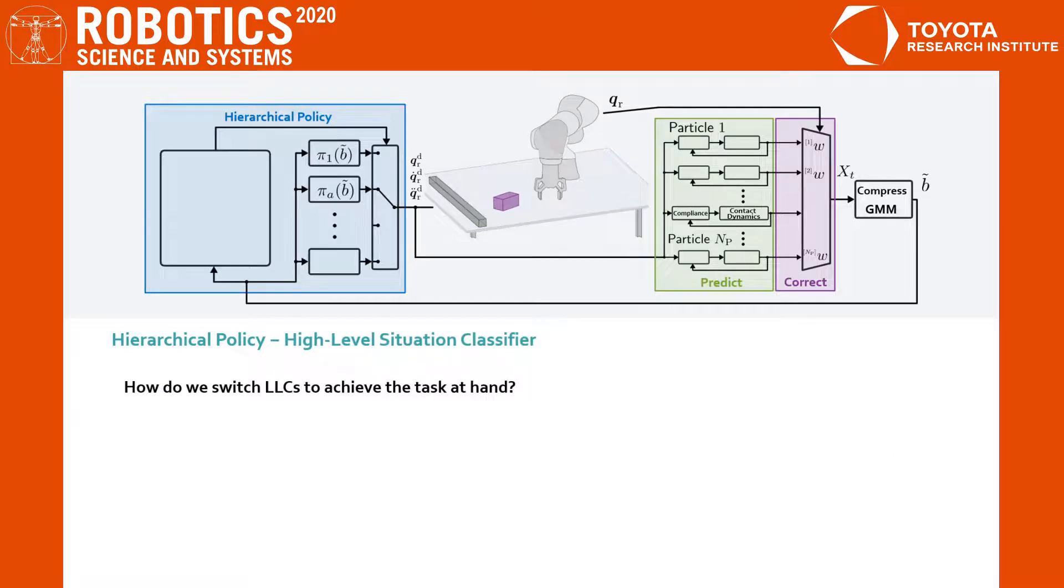The question remaining is, how do we switch these local controllers to achieve the task at hand? The evolution of the belief is stochastic. We are dealing with a continuous, high-dimensional state space, a discrete action space and, by design, sparse rewards. We solve this switching problem using reinforcement learning.